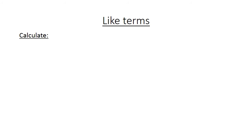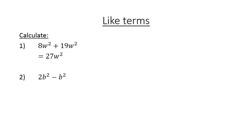Like terms: 8w squared plus 19w squared equals 27w squared. And 2b squared minus b squared equals b squared.